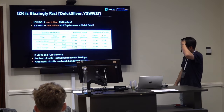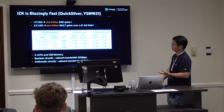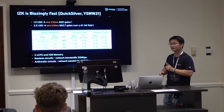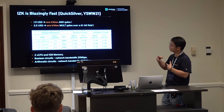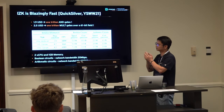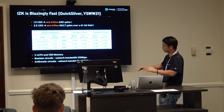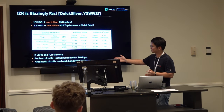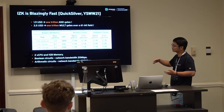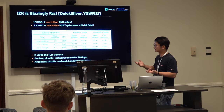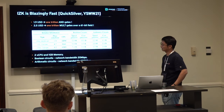From our experiments, IZK is remarkably fast. We can prove one trillion AND gates for just $2 on a very modest machine with two vCPUs and 1 GB memory. For multiplication gates over a 41-bit field, one trillion gates costs just $2.50. Even accounting for network bandwidth (since IZK is interactive), the protocol remains very fast. We can also batch proofs — proving one gate using just 1.0064 field elements.